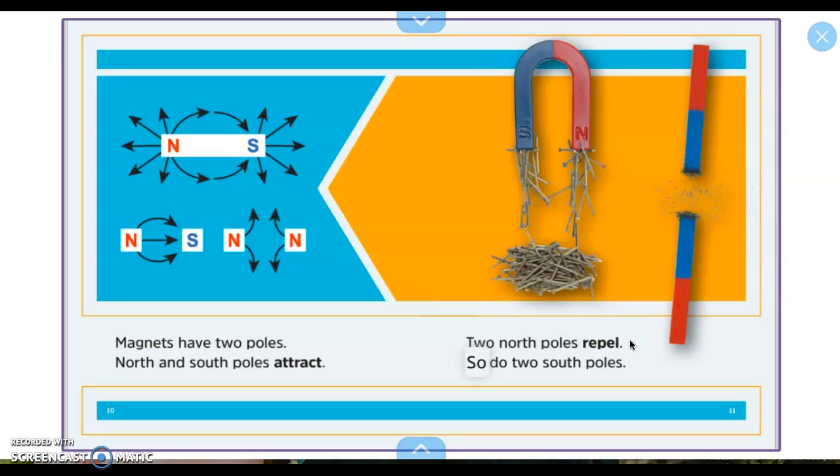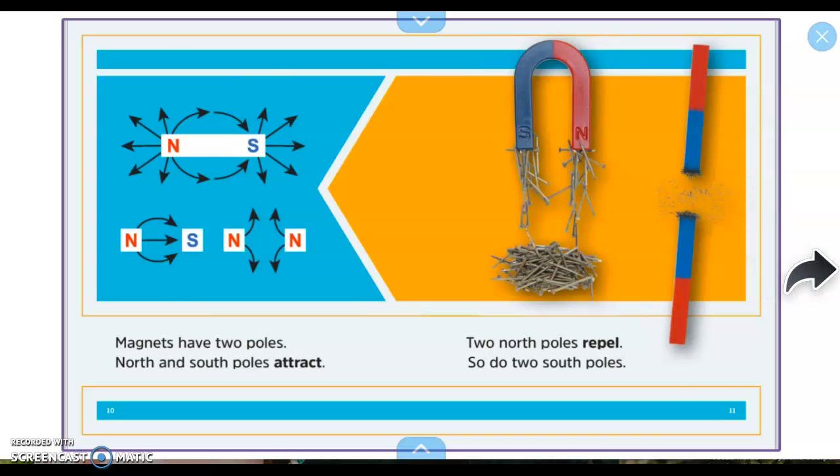They repel. Two north poles repel. So do two south poles. So these are opposite, right? So they attract. But look, when it's blue and blue, these are both south. And so if you push them together, they repel each other, so they will not touch.